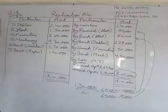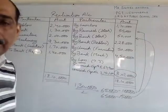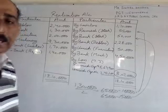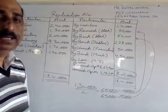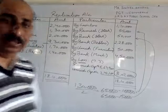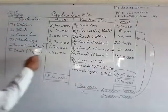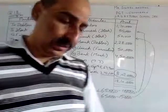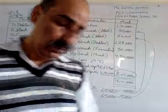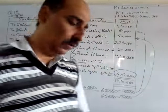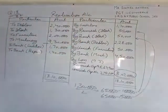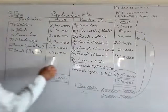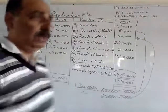Creditors ki payment karni thi. Agar is question ke andar creditor ki payment ka mention nahi bhi hota, tab bhi aapne creditors ki payment karni thi. Outsider liabilities ki payment aapne karni hi karni hai, chahe question mein likha ho ya nahi. To yahan by bank creditors 1,70,000. Last adjustment kehti hai there was an unrecorded bill of repair for 1,60,000 which was settled for 1,40,000. Repair bill ki entry — by bank (repair) 1,40,000.